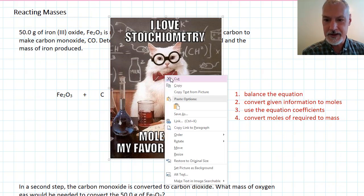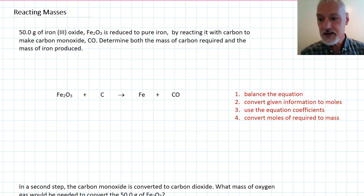Let's start by moving this out of the way. And the reaction I want to look at today is combining iron oxide, this material here, Fe2O3, with carbon to produce iron and carbon monoxide.